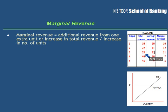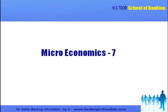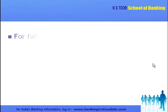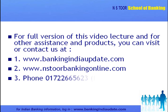By selling three units, the firm is getting total revenue of 33. And from sale of two units, it is getting 22. So there is additional revenue of 11. Hence this additional revenue becomes marginal revenue. So additional revenue from one extra unit, or increase in total revenue — like 12 here — divided by increase in number of units, that is 1. This is marginal revenue. Marginal revenue is equal to change in total revenue divided by change in number of units.